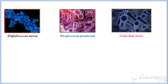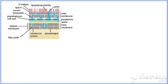The cell wall structure of gram-negative bacteria is more complex than that of gram-positive bacteria. Located between the plasma membrane and the thin peptidoglycan layer is a gel-like matrix called periplasmic space. Unlike in gram-positive bacteria, gram-negative bacteria have an outer membrane layer that is external to the peptidoglycan cell wall. Membrane proteins and membrane lipoproteins attach the outer membrane to the cell wall.